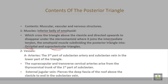The vessels in the posterior triangle: number one, arteries — the third part of the subclavian artery; then the subclavian vein in the lower part of the triangle. Number two, suprascapular and transverse cervical arteries arise from the thyrocervical trunk of the first part of the subclavian artery. In addition, the external jugular vein pierces the deep fascia of the roof above the clavicle to end in the subclavian vein.